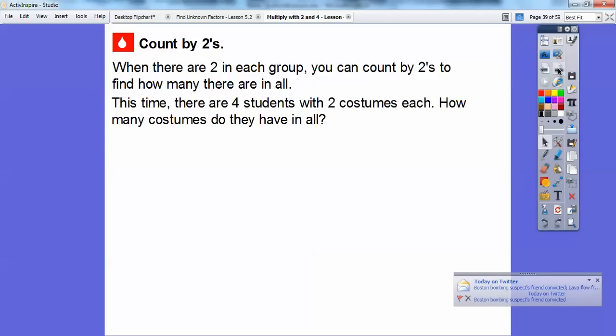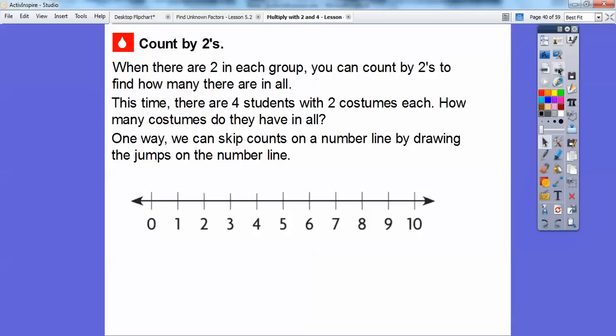So this time, Mrs. Bullock, she has 4 students. And each of the 4 students has 2 costumes each. So how many costumes do they have? And here's another way. We can just have a number line here, and we can skip count. Instead of counting by 1s, we're going to count by 2s. We'll just go plus 2, plus 2 on the counting line. Skip counts on the number line by drawing the jumps on the number line. So watch. We'll start at 0, and we'll go plus 2. And I'm going to do it this many times, 4 times.